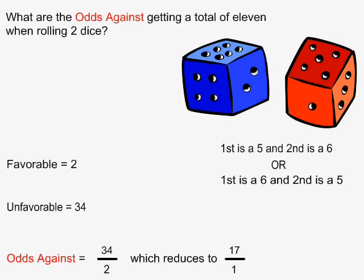Odds against is equal to unfavorable over favorable, which is equal to 34 over 2, and this reduces to 17 over 1.